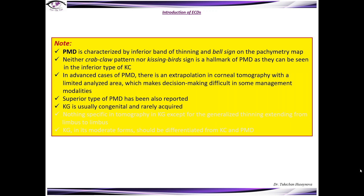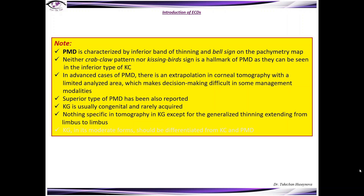Keratoglobus is usually congenital and rarely acquired. There is nothing specific in tomography in keratoglobus except for the generalized thinning extending from limbus to limbus. In its moderate forms, keratoglobus should be differentiated from keratoconus and PMD based on the clinical features mentioned.